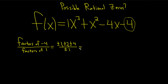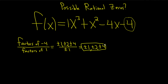Then you just divide. 1 over 1 is 1. 2 over 1 is 2. 4 over 1 is 4. So these would be the possible rational zeros of this polynomial function.